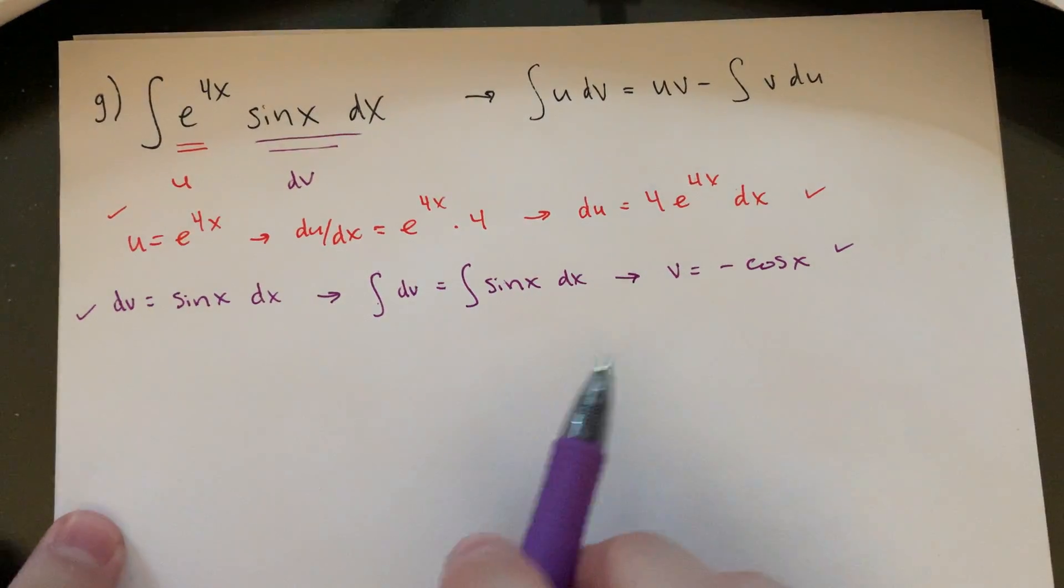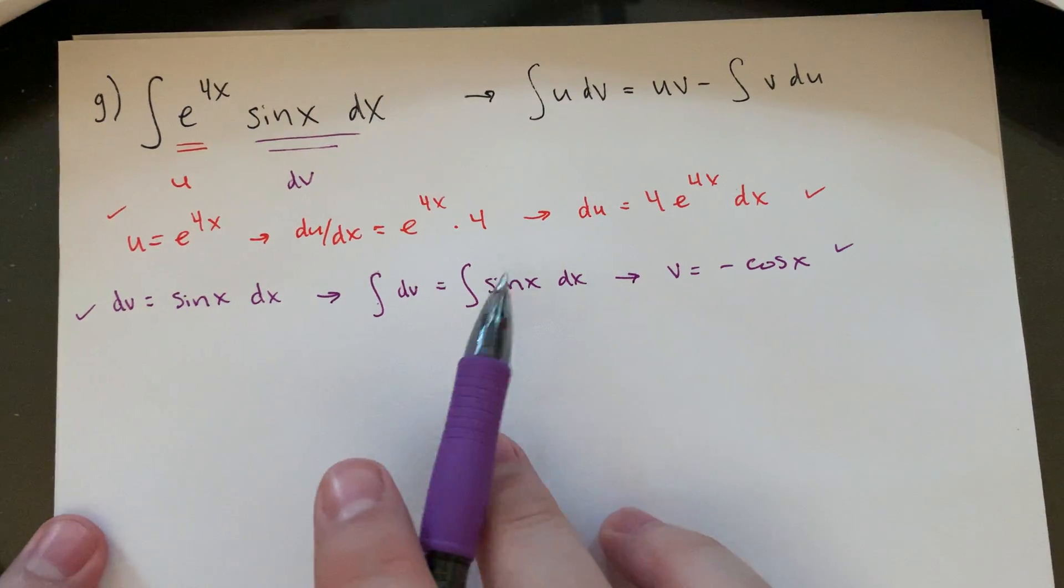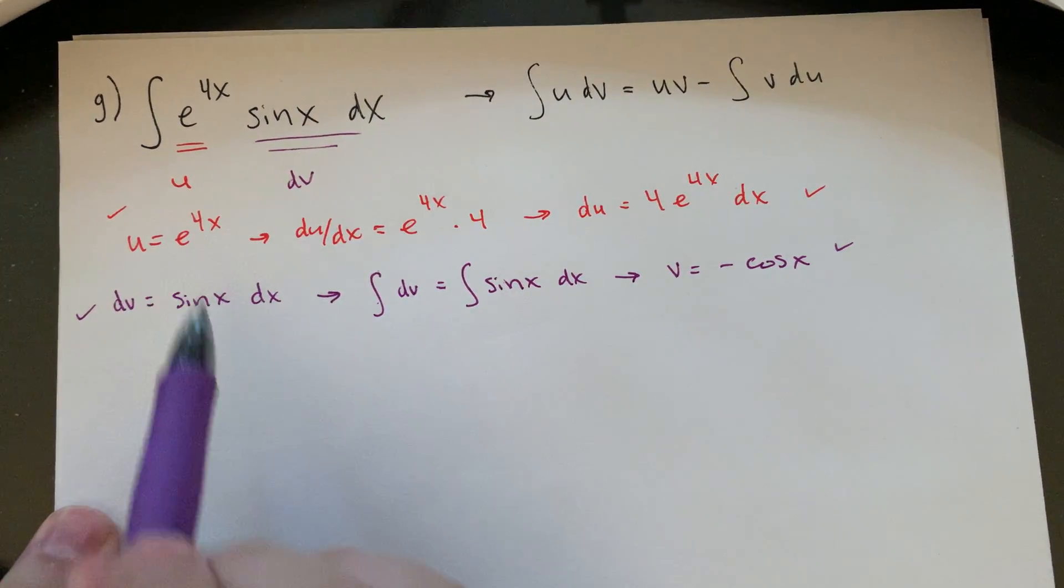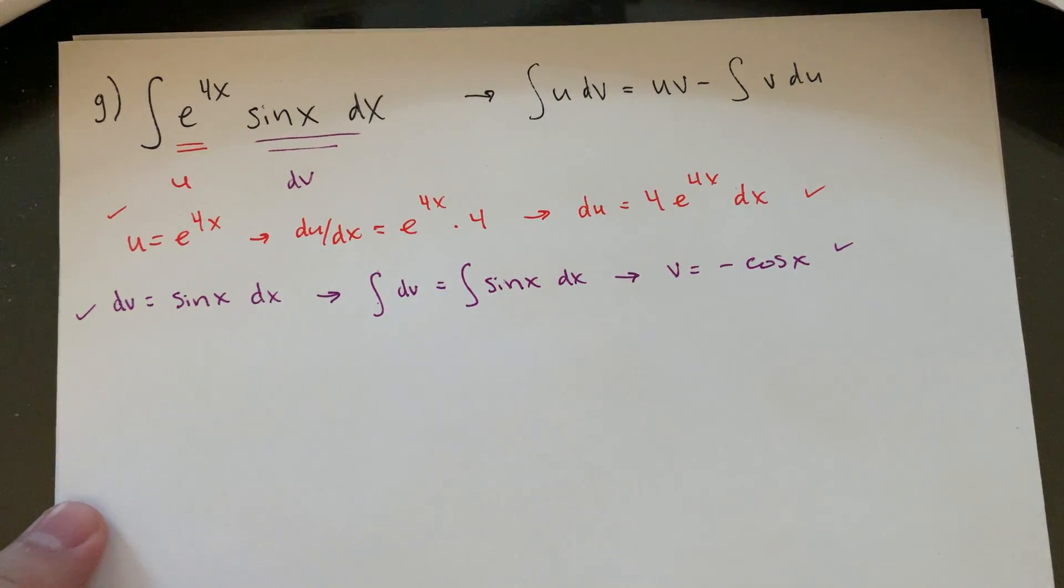And again, the reason I like that is just I don't have to fool around with the extra 4 that I get here. Not that there's anything wrong with that. If I flip these and I had my dv was e to the 4x, your anti-derivative would be e to the 4x times 1 fourth rather than times 4, if you're running it in reverse.